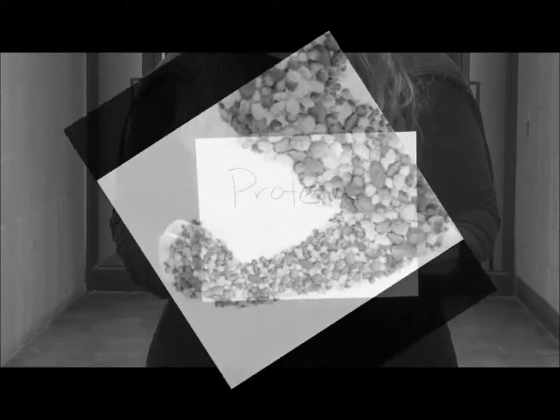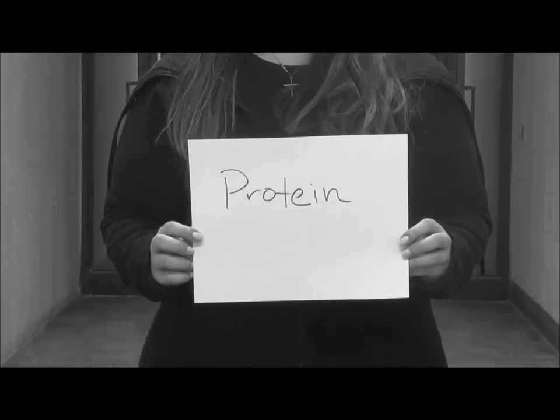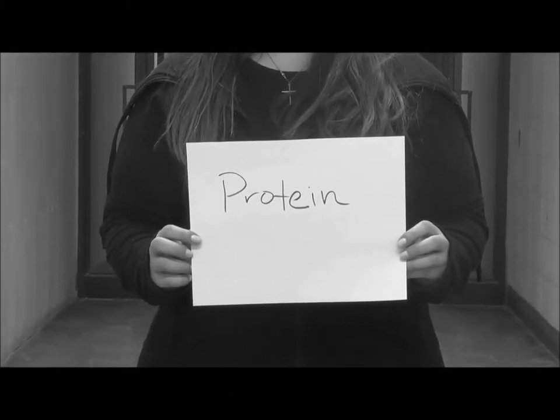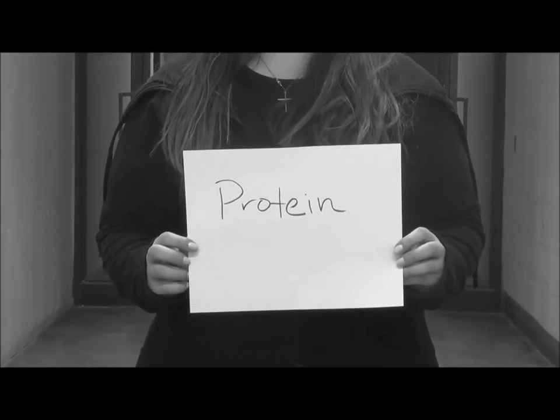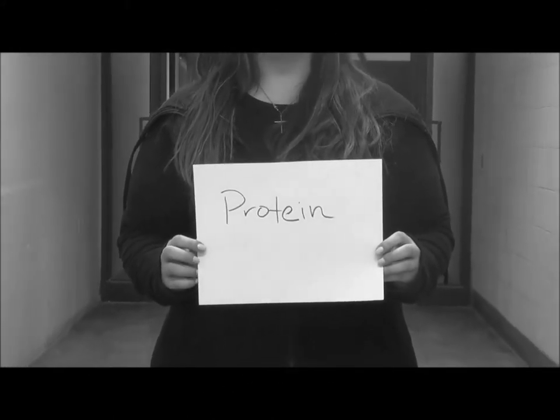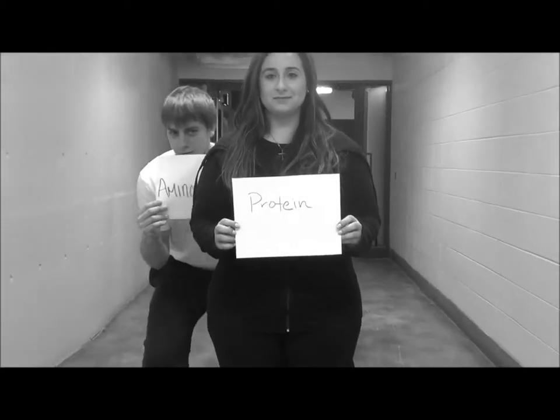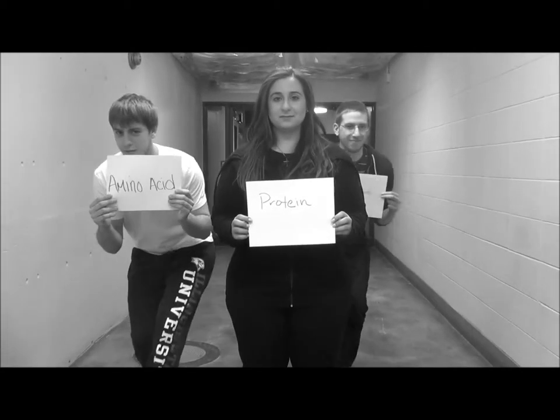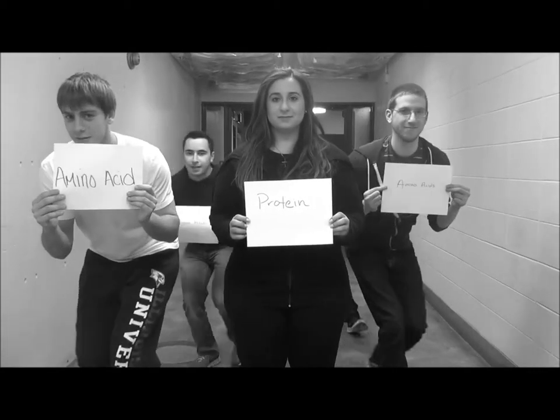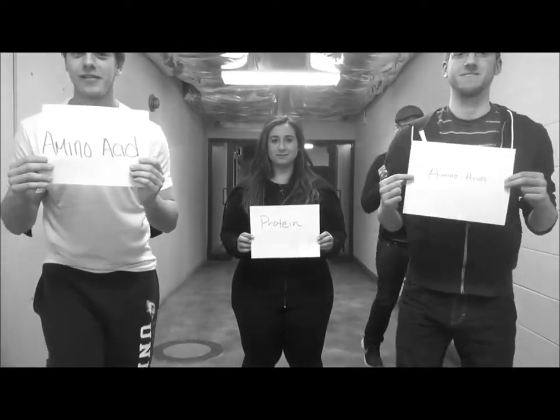In order for proteins to be converted into Acetyl-CoA, they must go through the bioenergetic process. This happens when amino acids begin to convert to pyruvate by being aerobically metabolized. The amino acids that are converted can be used to produce glucose, and are then termed glucogenic.